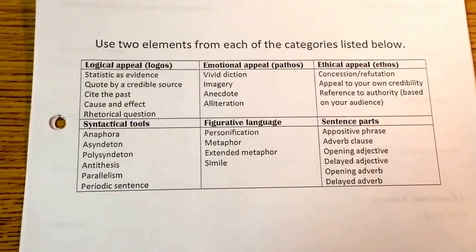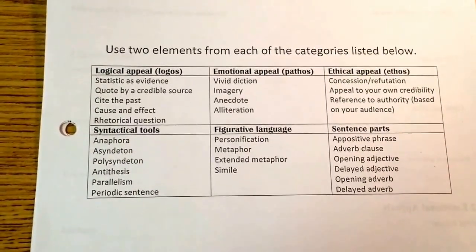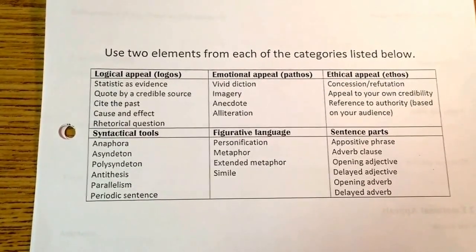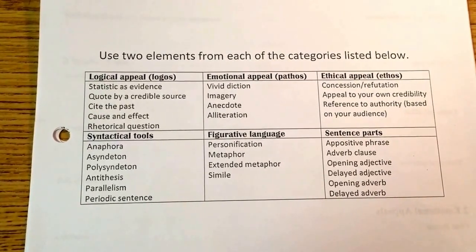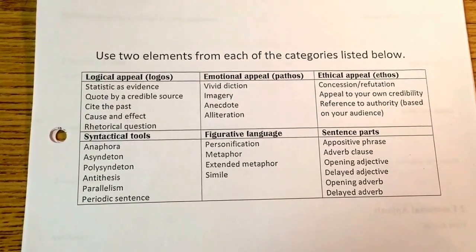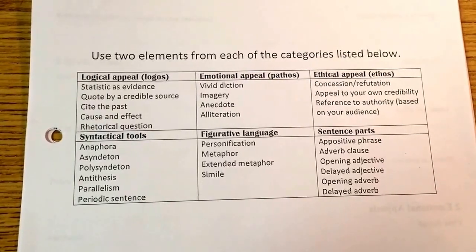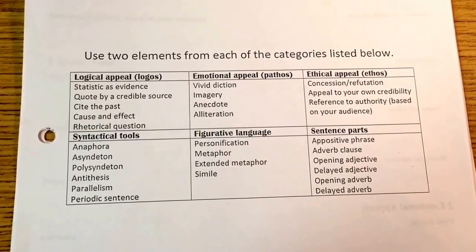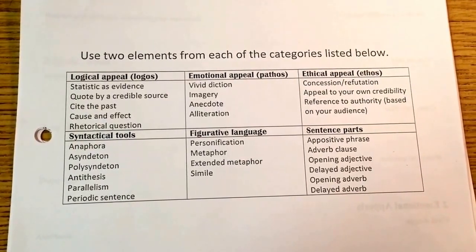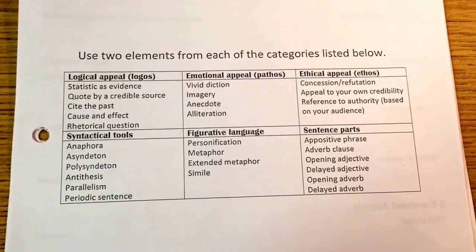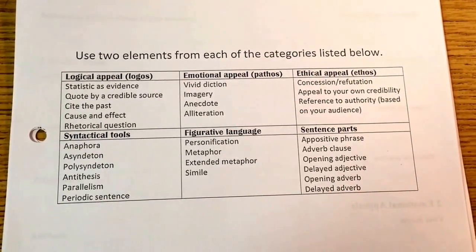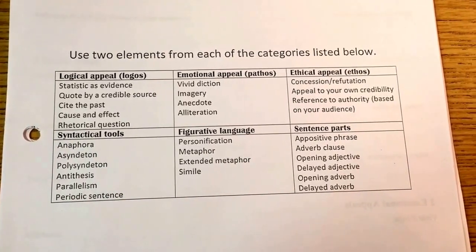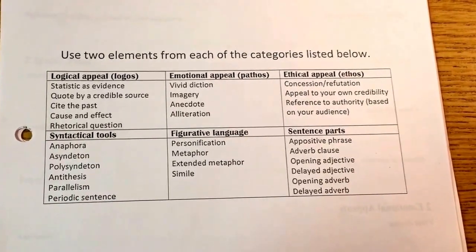The actual instructions are: use two elements from each of the categories listed below in your paper. You're going to create these rhetorical tools into your already existing paper, which might mean you already have some of them. It could also mean you may need to add some of them. You just need two elements from each of the categories.